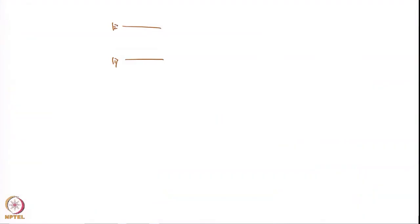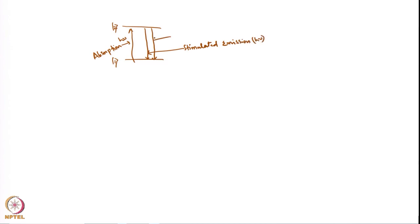When you have state 1 and 2, there is absorption, which happens in the presence of h-nu. There are two kinds of emission: one that happens in the presence of h-nu is called stimulated emission, and there is spontaneous emission, which happens in the absence of h-nu. The rate constants or coefficients are: absorption is called B, stimulated emission is also called B, and spontaneous emission is A.